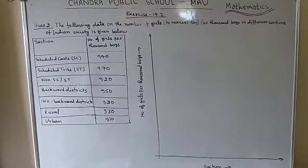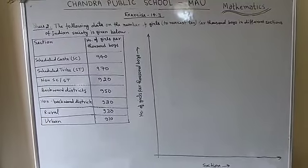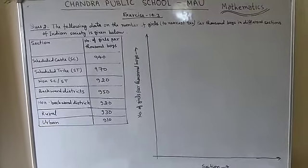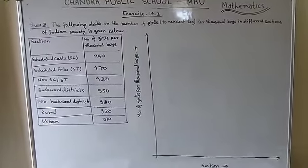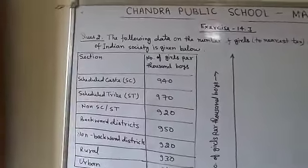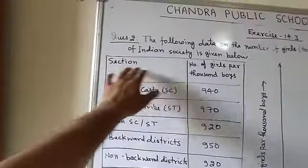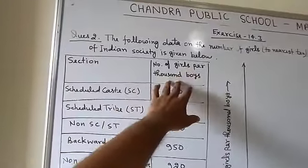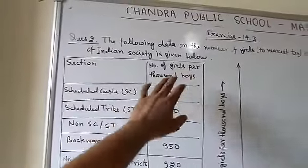Welcome students. Today I am going to explain question number 2 of exercise 14.3. The following data on the number of girls to the nearest 10 per thousand boys in different sections of Indian society is given below.